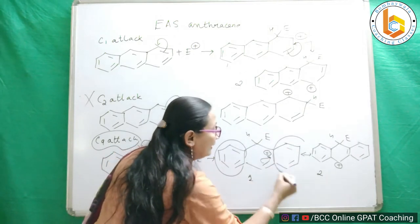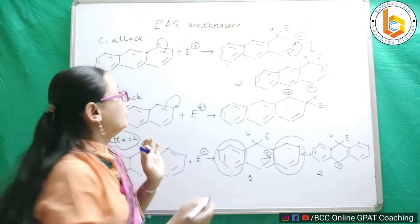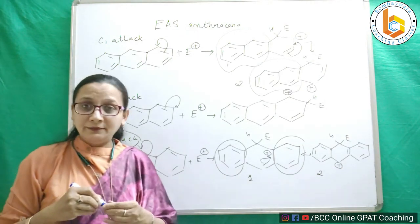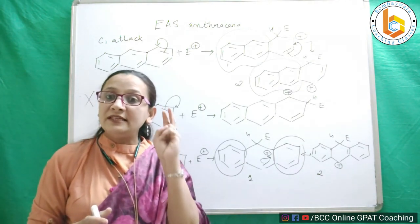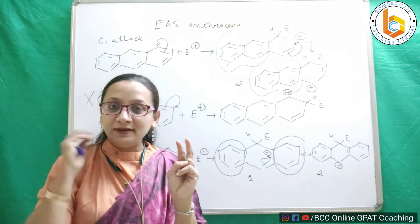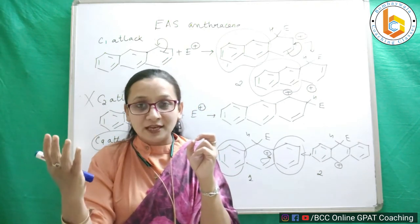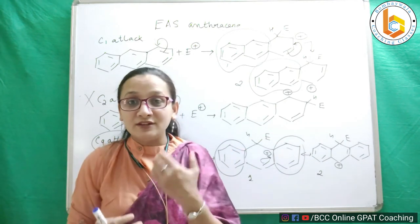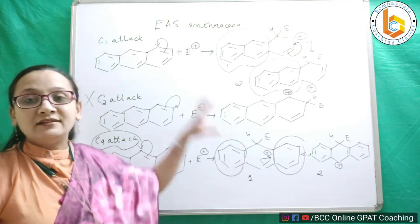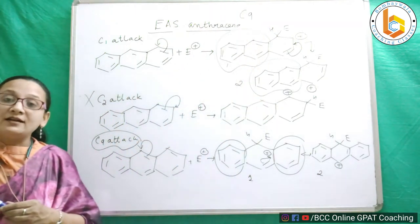When attack occurs at C9, you get two benzene rings intact in the resonating forms. When attack occurs at C1, you get a naphthalene ring intact. We have learned that two separate benzene rings together are more stable than one naphthalene ring — this is supported by their energies as well. That makes the attack at position 9 much more stable than attack at position 1, and that is why electrophilic aromatic substitution in anthracene always occurs at position 9.